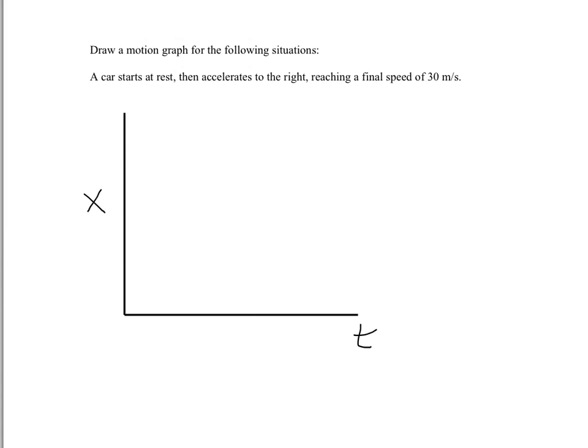So we're going to remember our same things as before, that the slope of a position graph is equal to the velocity. So in this case, the car starts at rest, so that means the car has a velocity of 0, and so that means it's going to start off with a slope of 0.